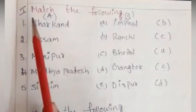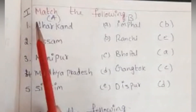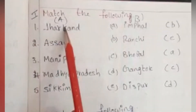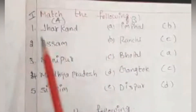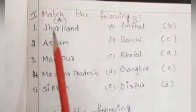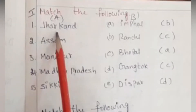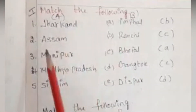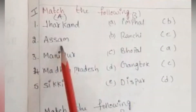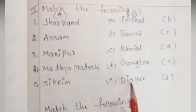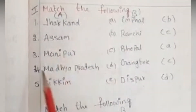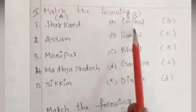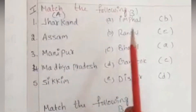Next, we will discuss the Match the Following. Here I have given A and B. First one: Jharkhand — the answer is Ranchi. Second one: Assam — the answer is Dispur. Third one: Manipur — and the answer is Imphal.